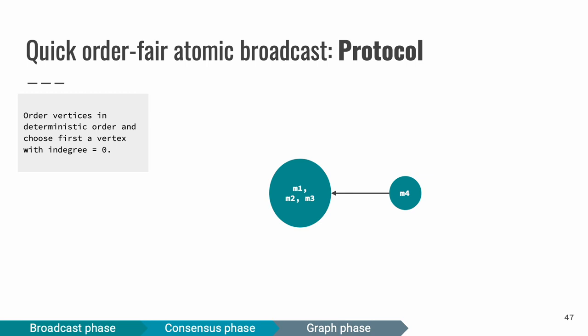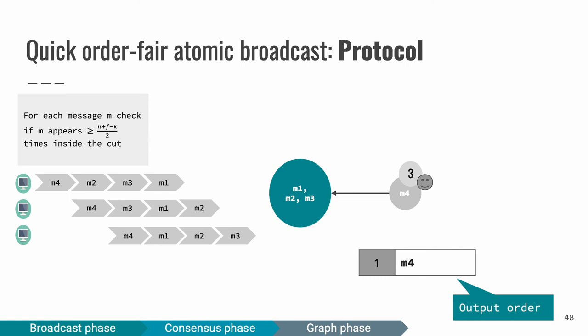Before we OF deliver a message, we need to check if this message satisfy condition given in the upper left corner. Condition says that we need a message to appear at least in two message logs before we deliver it. In this case, message 4 appears in three messages logs. Therefore, we can OF deliver this message. Since the message M4 is OF delivered, we can remove this message from the graph and we put this message in the set of delivered messages.